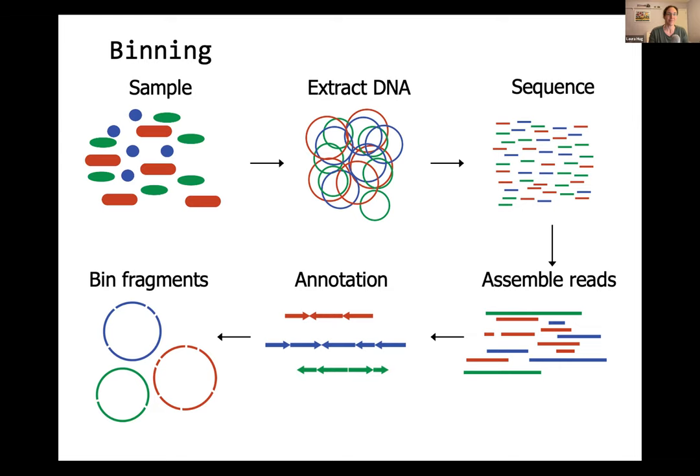So we're moving on. We have our MAGs. We've assembled our data, we're now working with these longer fragments. We typically size-select to 2,500 base pairs and up as a useful informative chunk and dismiss anything smaller. That's our personal preference — some people work with 1,000 and up. Below that you start to get a lot of stochastic error in how the binning happens.